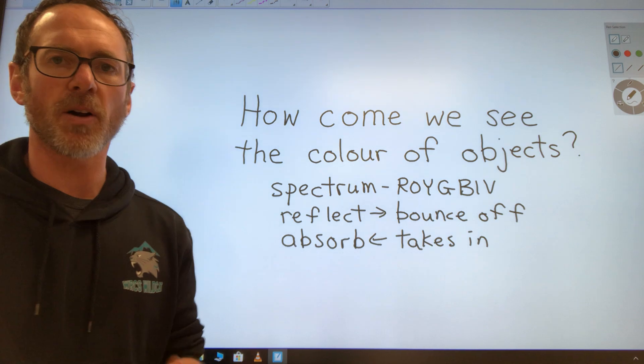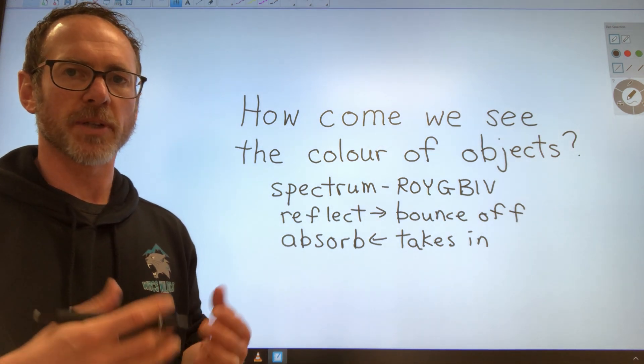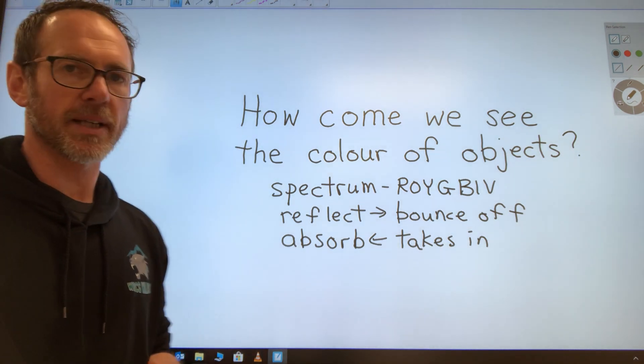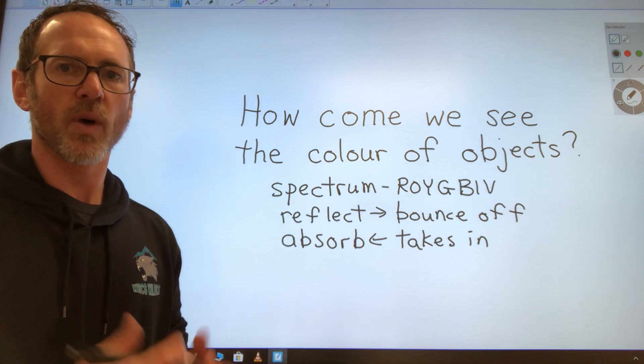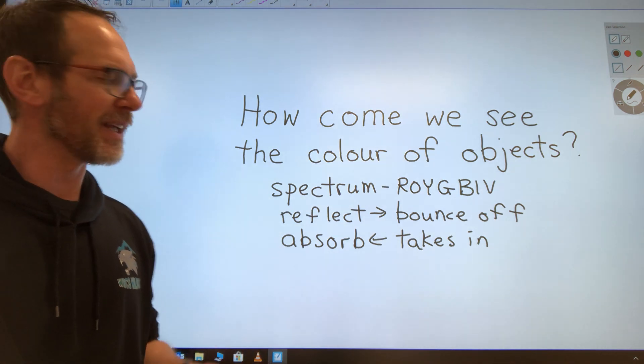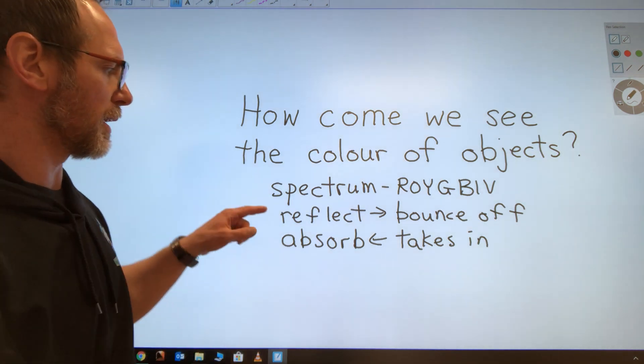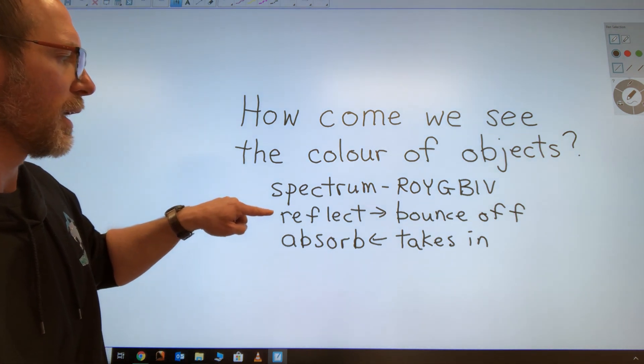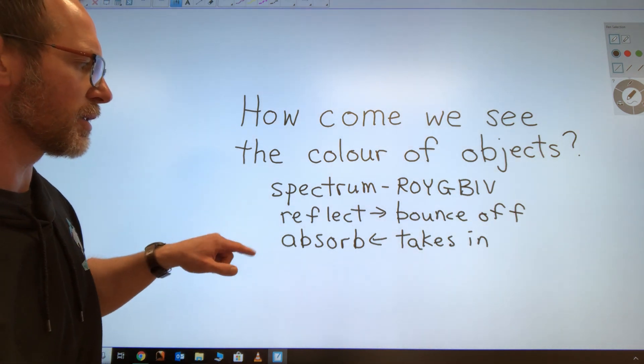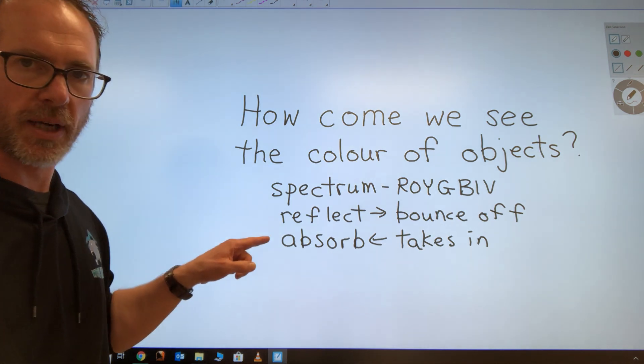It all depends on what the object is made of, what the object's materials are, what chemicals are in its surface. And that will decide whether it reflects certain colors or it absorbs certain colors.